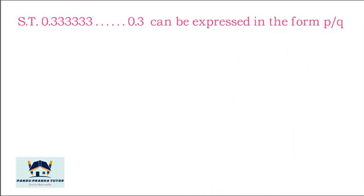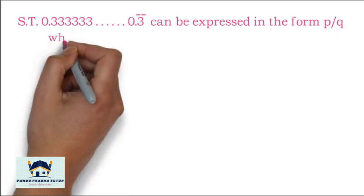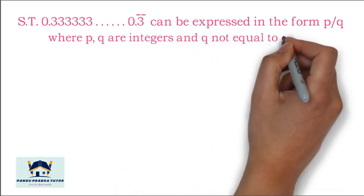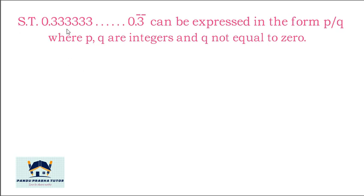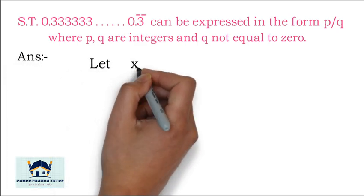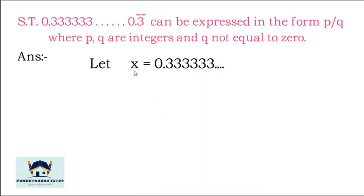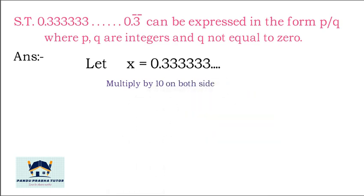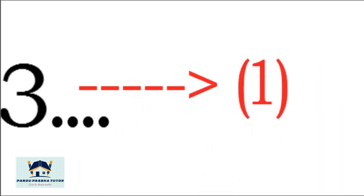Show that 0.3333333... which equals 0.3̄, can be expressed in the form p/q where p and q are integers and q ≠ 0. This is a recurring decimal expansion. Let x = 0.33333... — call this equation 1. Since only one digit is repeating, multiply both sides by 10.